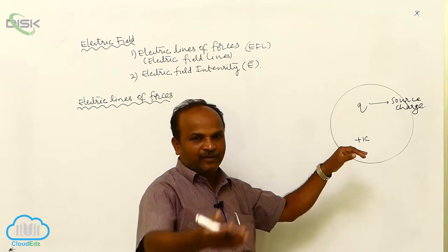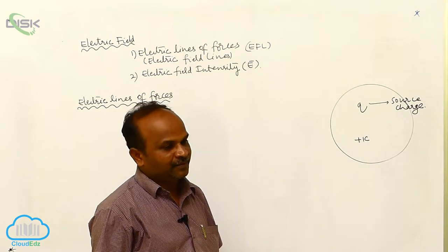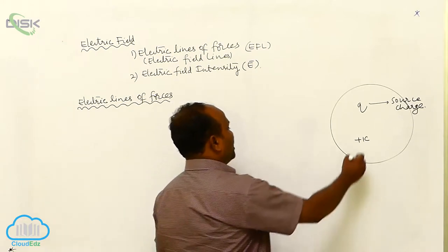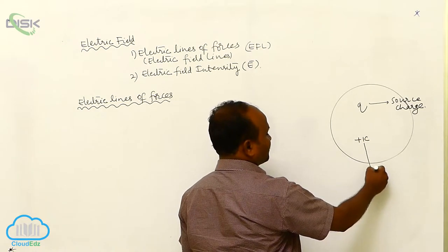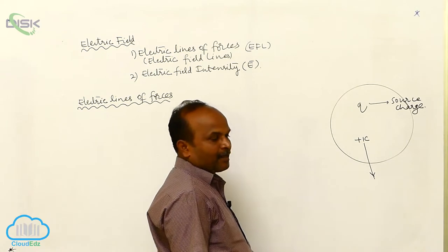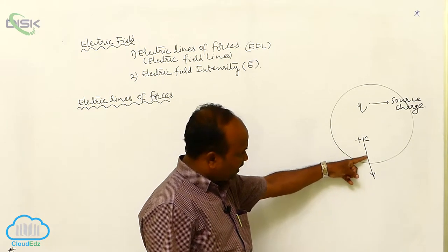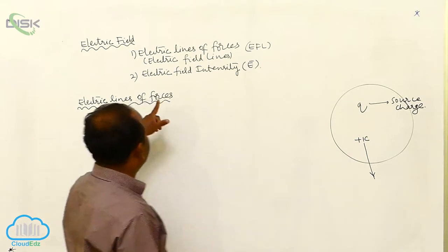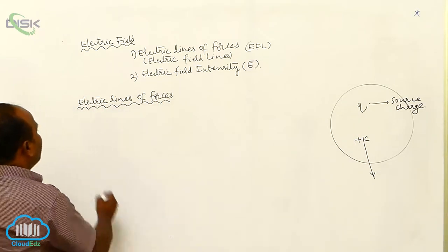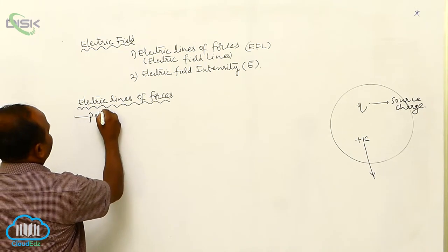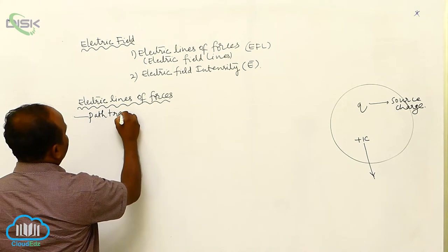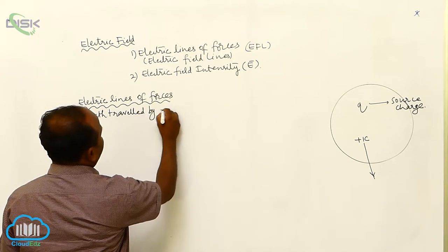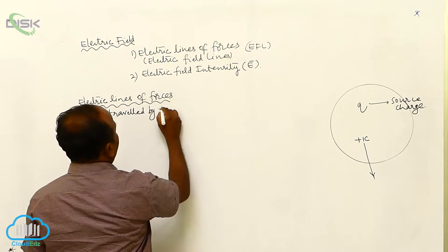Between the source charge and the unit positive charge, there is either an attractive force or a repulsive force. Because of these forces, the unit positive charge tends to move along a particular path. The path travelled by the unit positive charge is called electric lines of force.